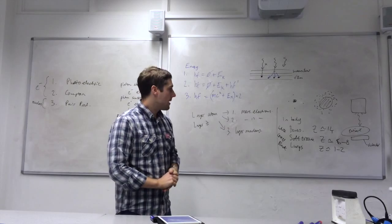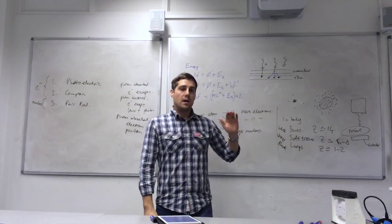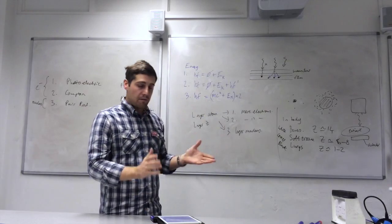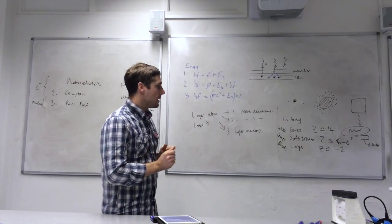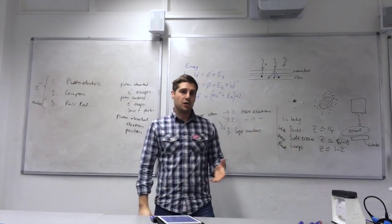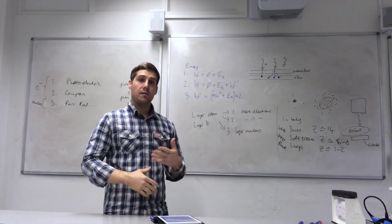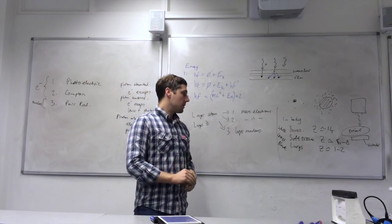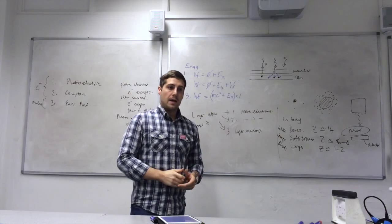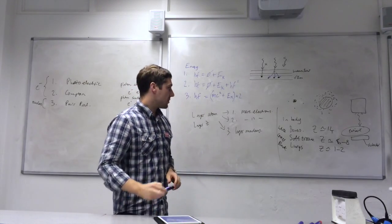That's image intensifiers. Next we have contrast media. So we've noted that the soft tissue has a low atomic number, average or mean atomic number. So that means if you want to get a decent image of soft tissue, with X-rays that's very difficult, unless you have some method of enhancing it. And there is a method for doing that, and it's called contrast media.